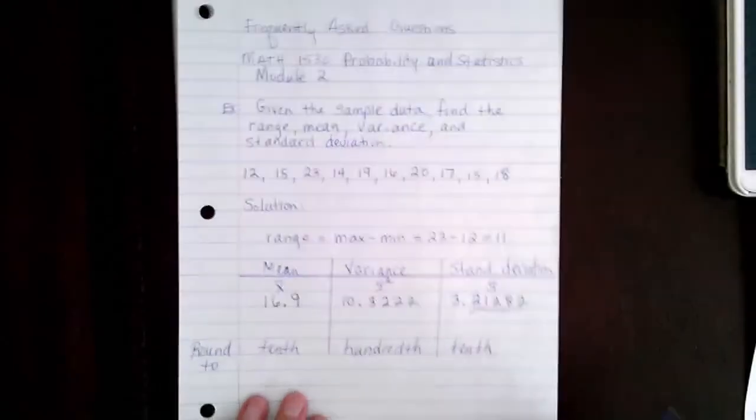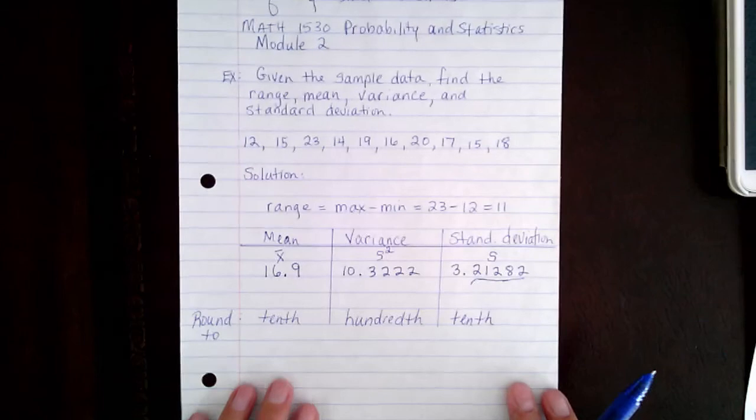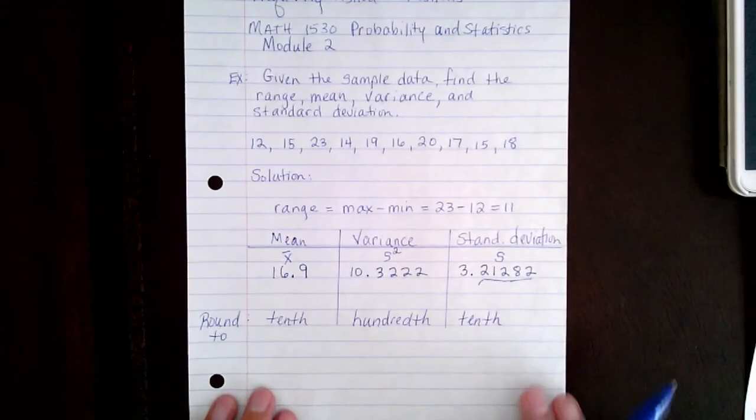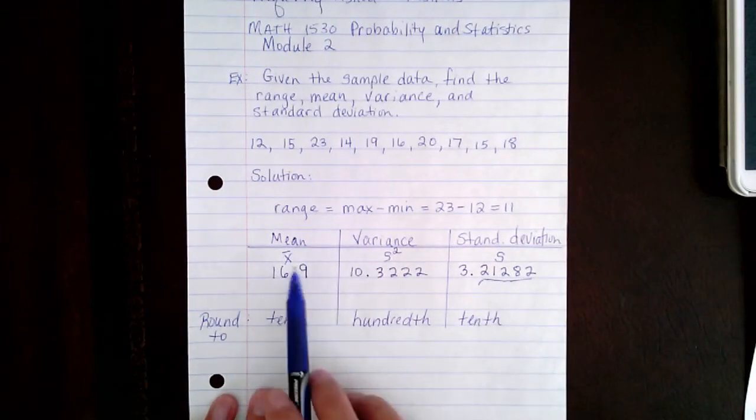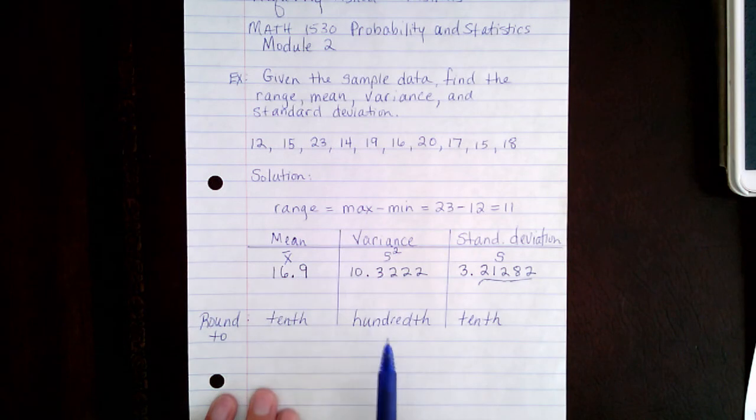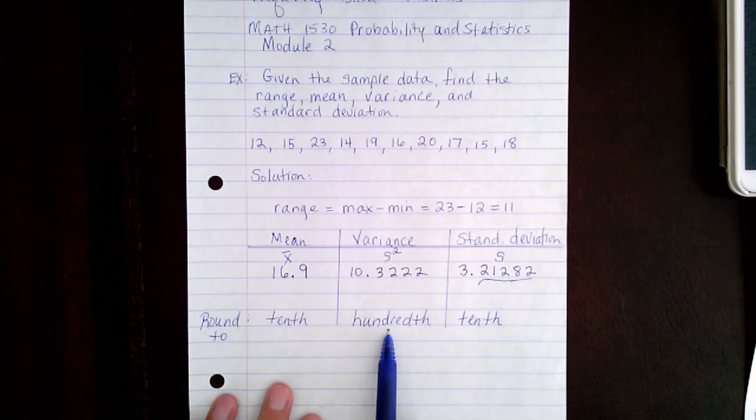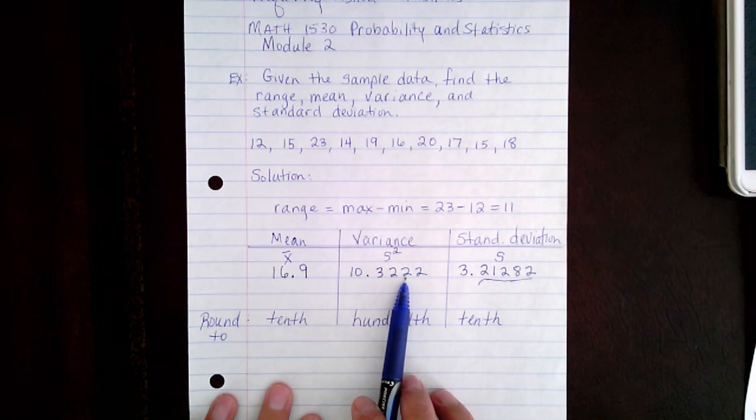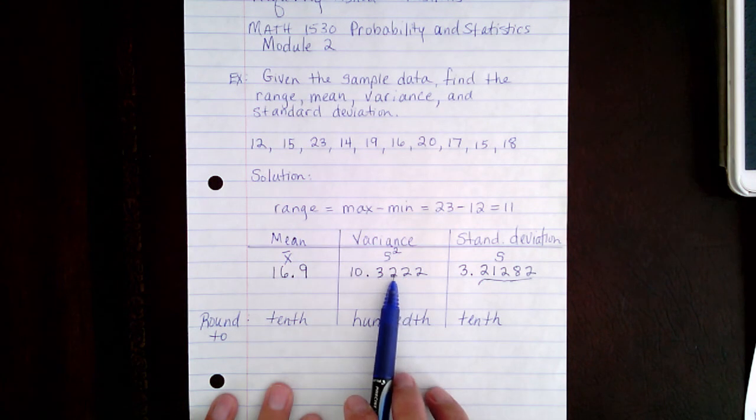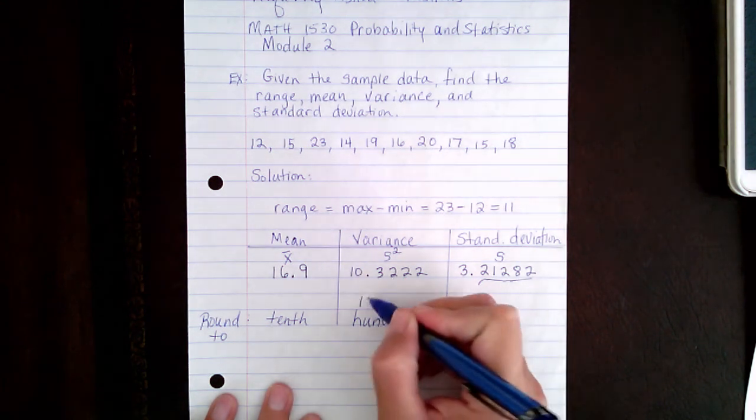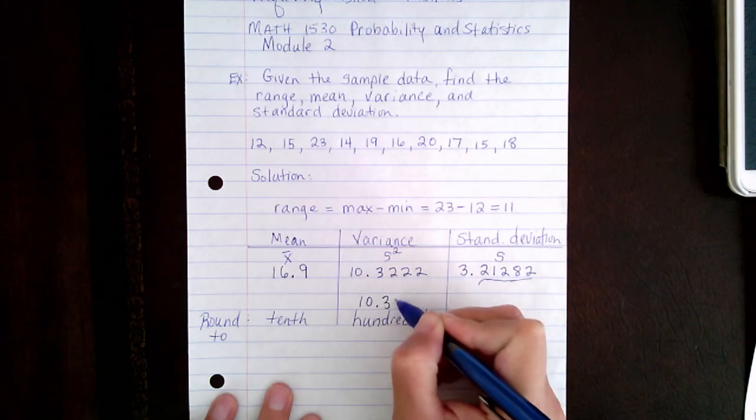So here on this problem, we were asked to round to the tenths place for the mean, well that's already there, that's the tenths place. This one we're asked to round to the hundredths place, so that means I'm going to look to the thousandths place value. Here it's a 2, it's not 5 or bigger, so I'm going to leave this alone, and the answer is going to be 10.32.